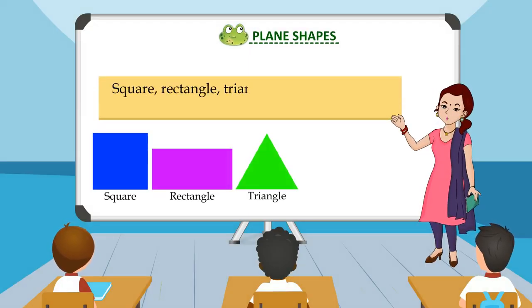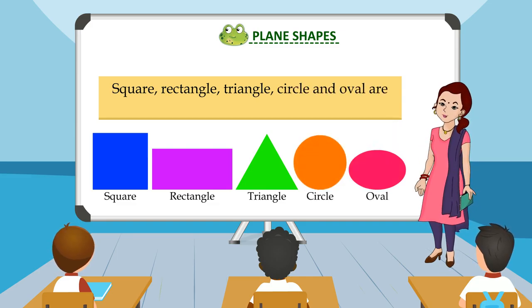Square, rectangle, triangle, circle, and oval are plane or flat shapes. These are called 2D shapes.